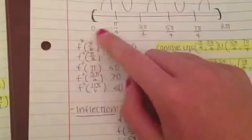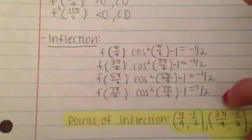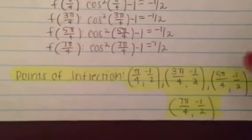After determining concavity, we find the points of inflection — where the function changes from concave up to concave down. Since the graph alternates concavity at each of the four x-values, all four are points of inflection. Plugging each into the original function, all give y equal to negative one half. So the points of inflection are (pi over 4, negative 1/2), (3 pi over 4, negative 1/2), (5 pi over 4, negative 1/2), and (7 pi over 4, negative 1/2).